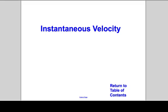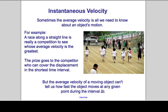Instantaneous Velocity. Sometimes the average velocity is all we need to know about an object's motion. For example, a race along a straight line is really a competition to see whose average velocity is the greatest. The prize goes to the competitor who can cover the displacement in the shortest time interval. But the average velocity of a moving object can't tell us how fast an object moves at any point during the interval delta t.